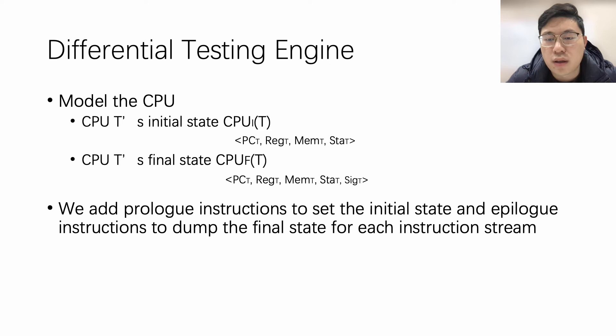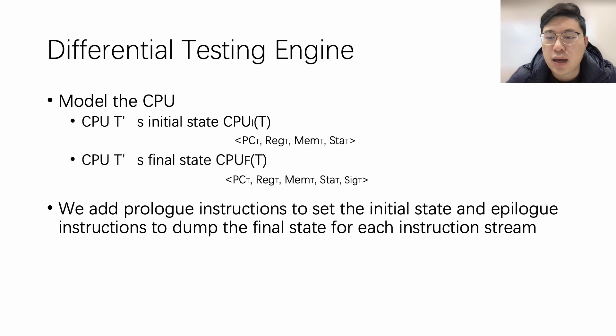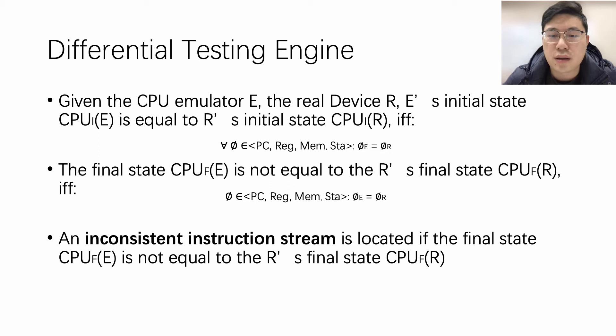The differential testing engine receives the generated test cases. We first model the CPU state. The initial state includes PC values, registers, memories, and system state. After executing the instruction stream, we get the final state, which has one more attribute: the triggered signals. We instrument prologue instructions to set the initial state and epilogue instructions to dump the final state for each instruction stream. We define that the initial states on both the CPU emulator and the real device are the same when all attributes match. After execution, if at least one attribute has different values, the final states differ and the instruction stream is marked as inconsistent.